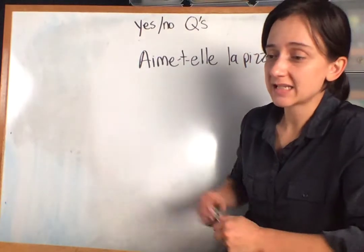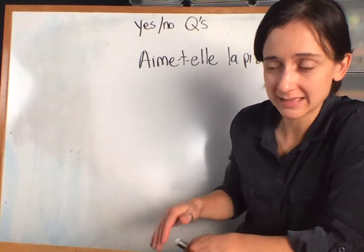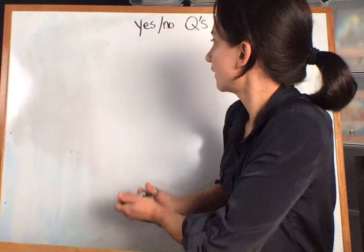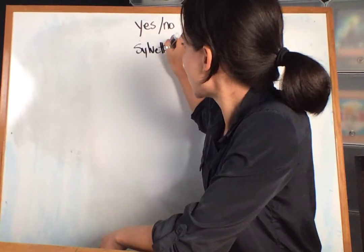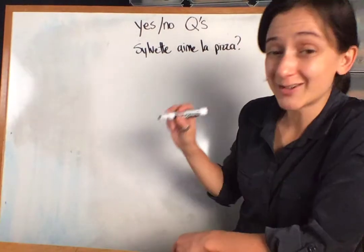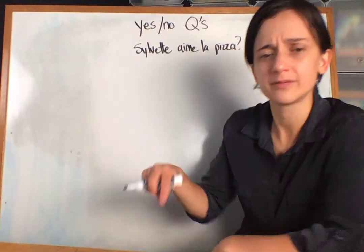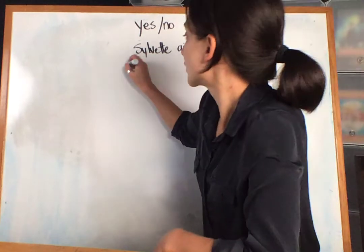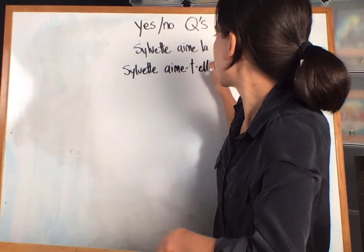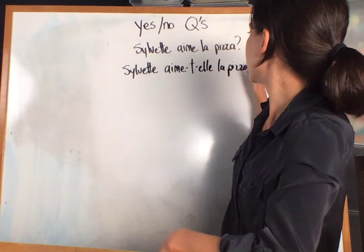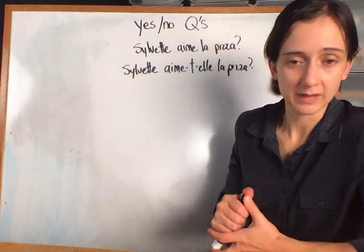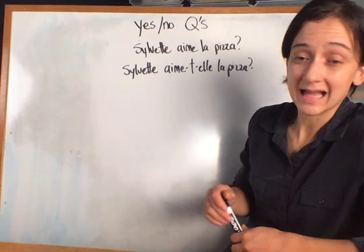One more trick: if you hadn't used 'elle' but instead used a name like 'Silvette,' you cannot do an inversion directly with the name. You could not say 'Aime Silvette la pizza?' You would have to add in 'elle.' So you'd say: 'Silvette aime-t-elle la pizza?' You just have to add 'elle.' You cannot do an inversion with a name — you do it with 'il,' 'elle,' and other pronouns.